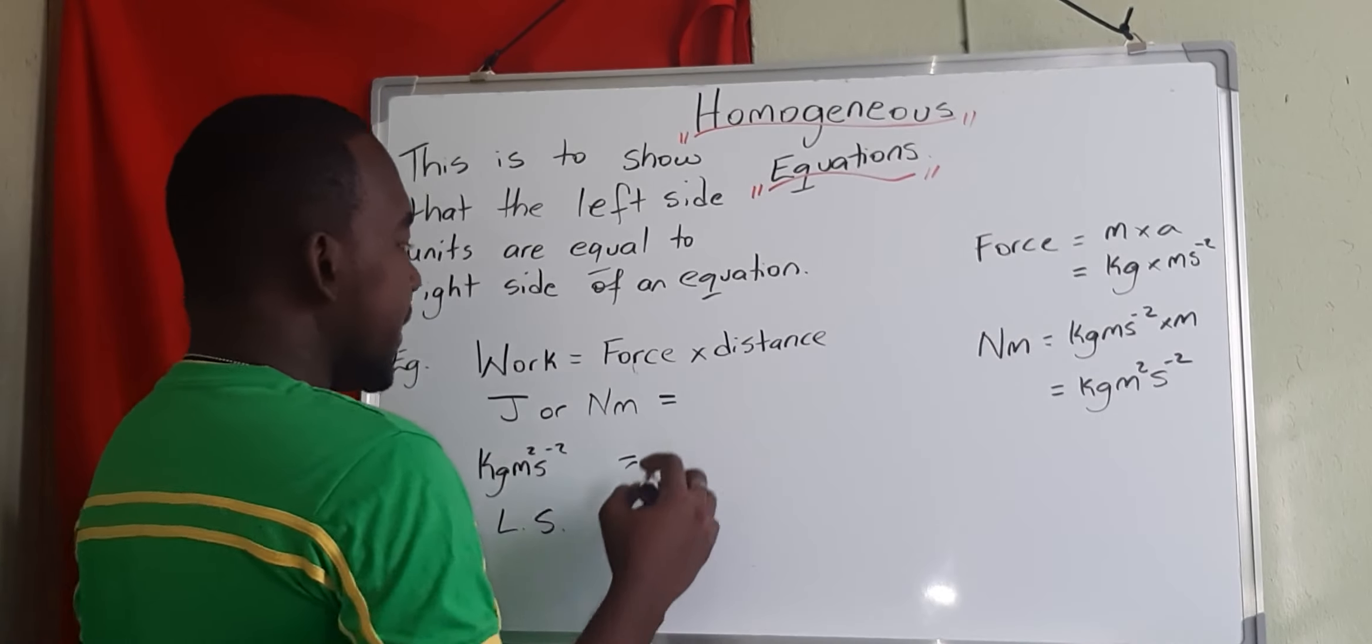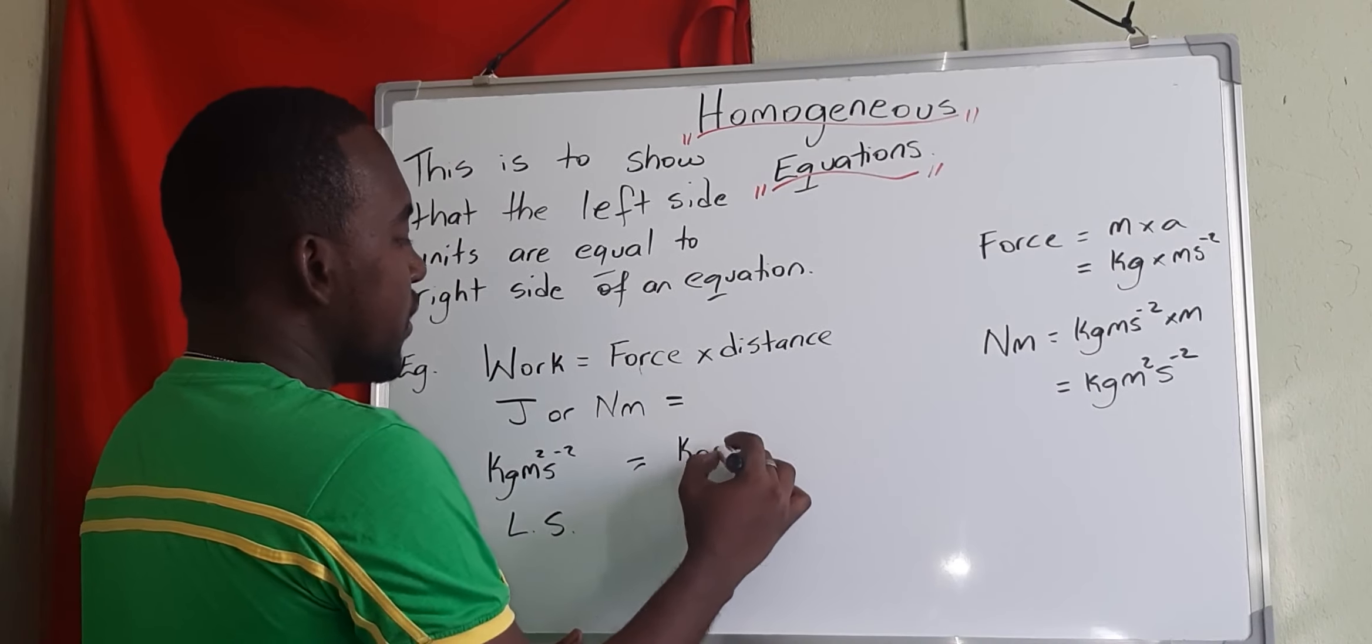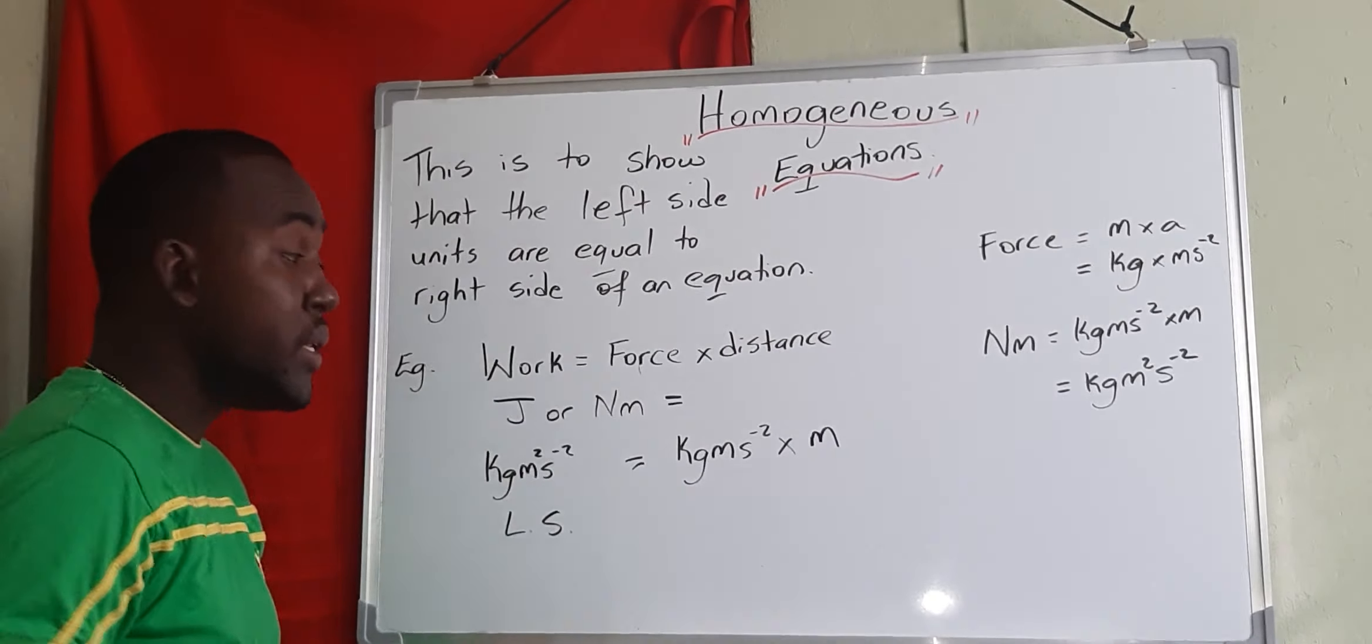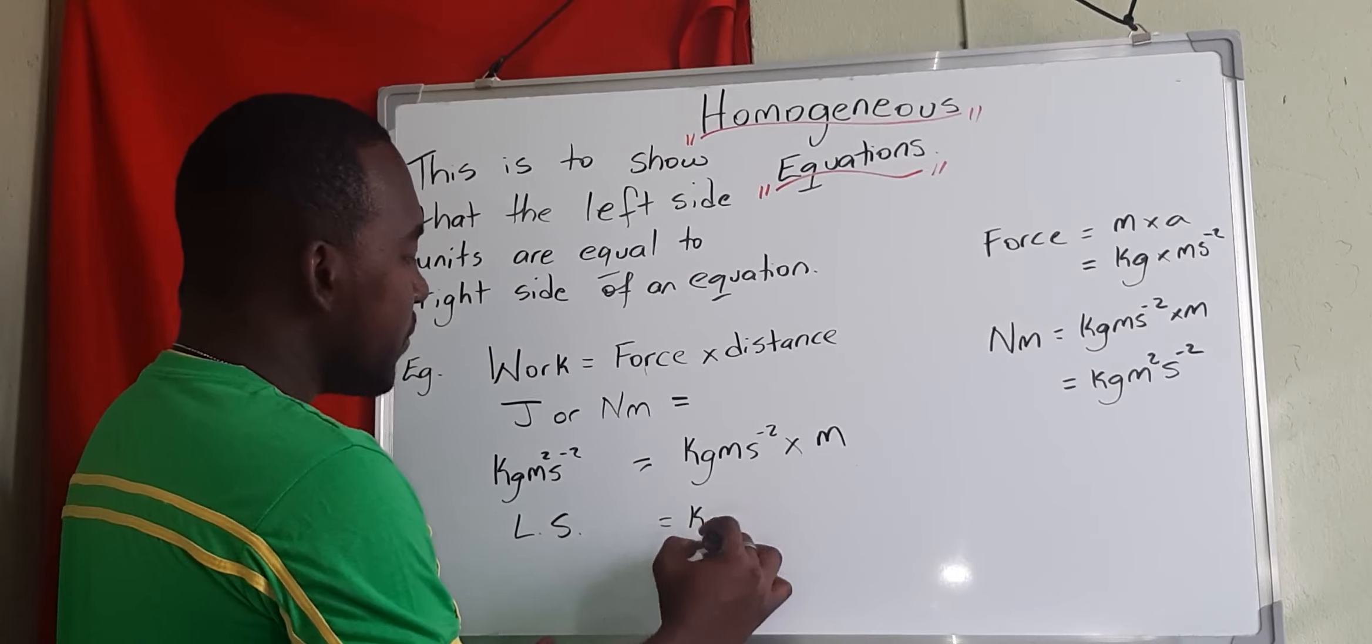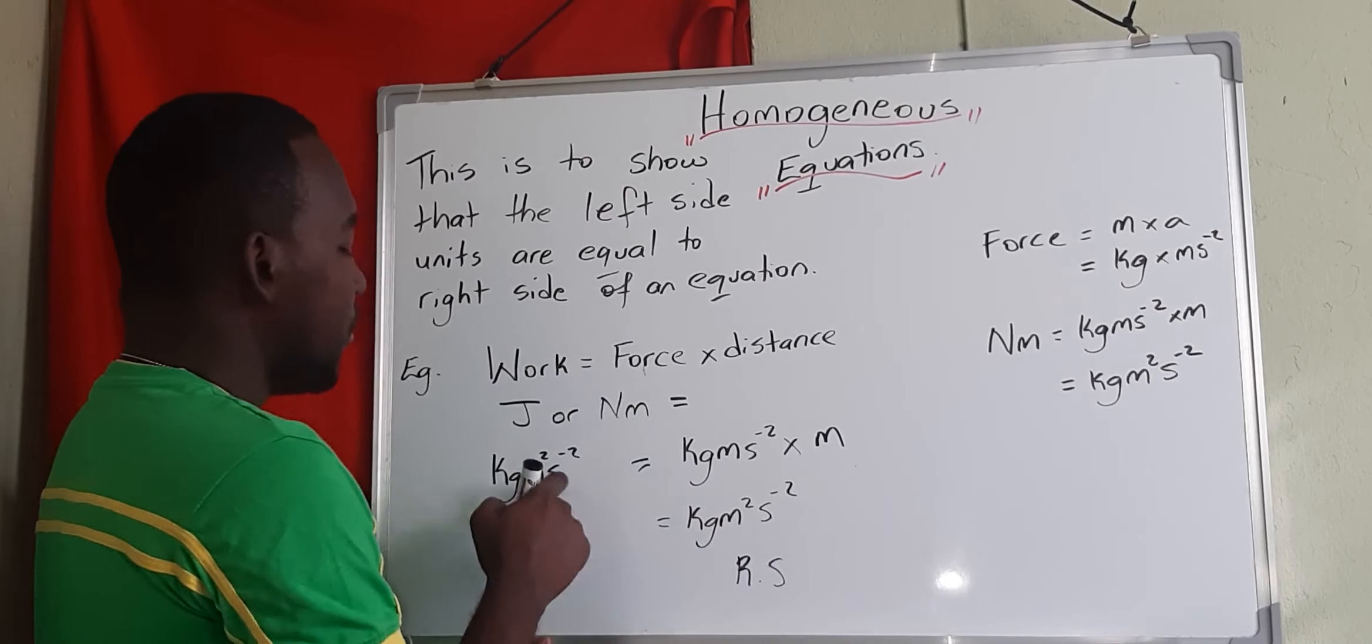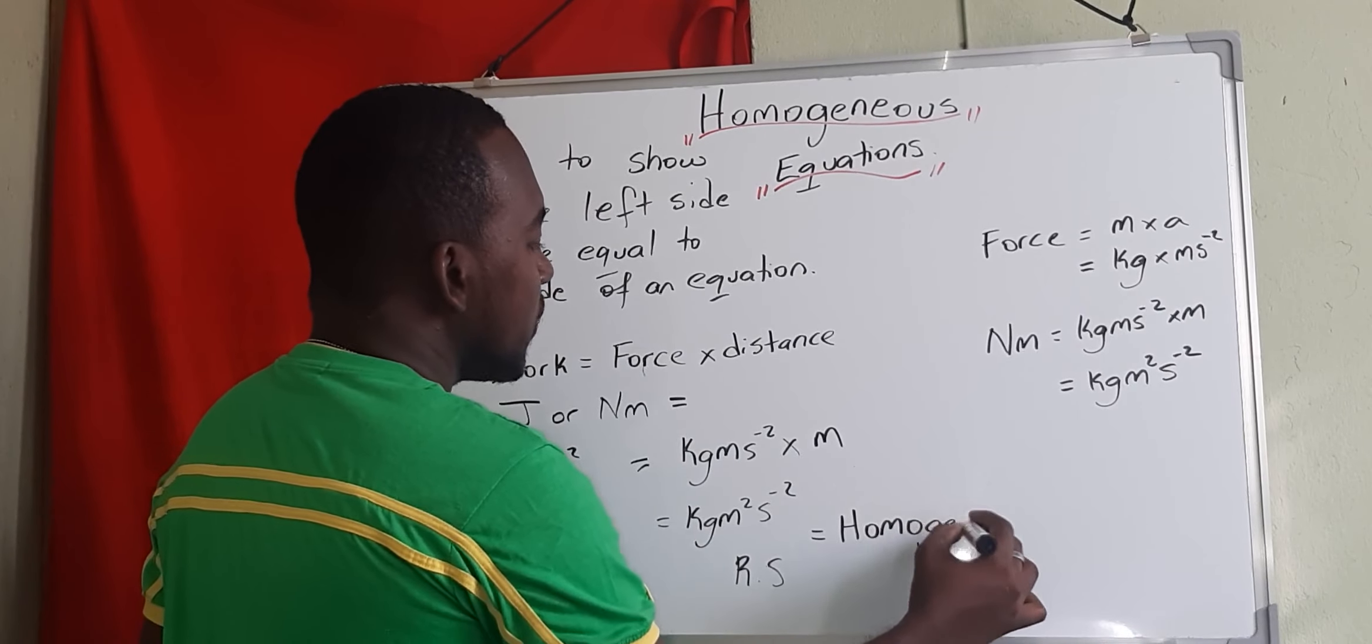Let's check the right side. The right side is the force, and force again is kilogram meter per second squared, multiplied by distance. And this distance has a base unit of meters. So if we do that, we get kilogram meter squared per second squared. So this is our right side. Notice both sides are equal, so we see that this equation is homogeneous.